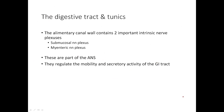The digestive system is operated by nerves: the submucosal nerve plexus and the myenteric nerve plexus. These are part of your autonomic nervous system, which means you do not consciously control the breakdown and digestion of food — your autonomic nervous system does it for you.